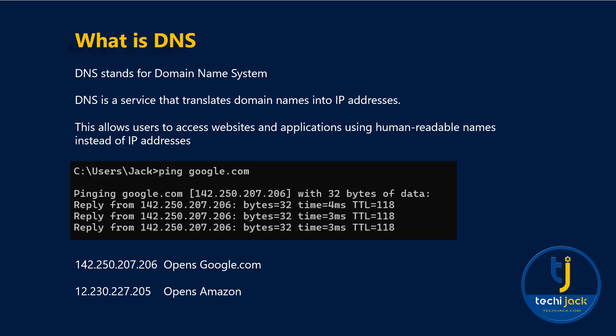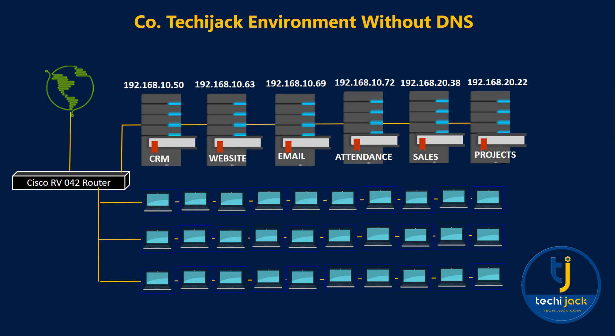Let's see the real scenario of a local corporate environment. This company Techie Jack is not using any DNS server or service. They are using an intranet where they have their CRM on 192.168.10.50, local website on 10.63, local email system on 10.69, attendance application on 10.72, sales portal on 20.38, and under-development projects on 20.22. Many employees get confused with the IP addresses and it is hard to remember the specific IP for each service. This kind of setup is incomplete and full of hassle, reducing the productivity of the business.